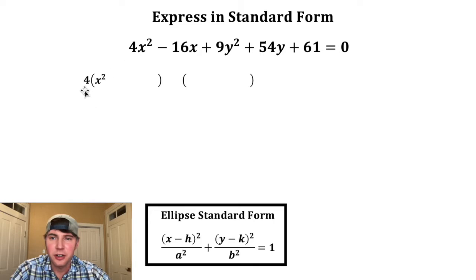So for the x's, we're gonna factor out the four and four times what gives us negative 16x, that's negative 4x and then plus space. And then we're gonna add the y's, we're gonna factor out the nine. Nine times what gives us 54y, that's 6y. And then we're gonna do another plus space.